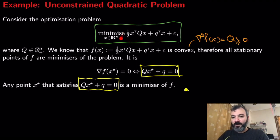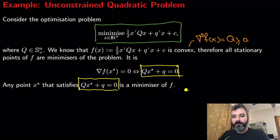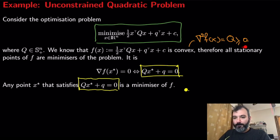This is called a quadratic problem because the cost function is quadratic: minimize one-half x-transpose Qx and so forth. We have assumed that Q is a symmetric positive semi-definite matrix. By doing so we know that the function is convex. We define this cost function and take the Hessian, which is equal to Q — the matrix Q — which is positive semi-definite, and that's why the function is convex.